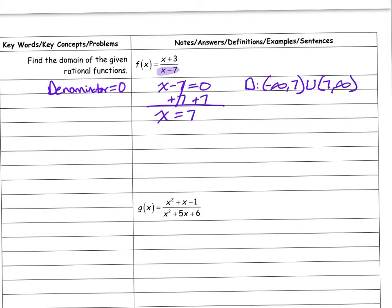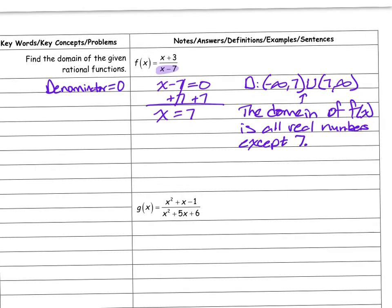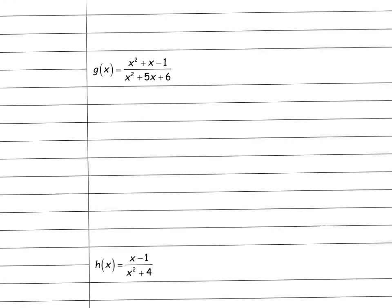Alternatively, I can write it out: the domain of f(x) is all real numbers except 7. Both forms say the same thing. Notice I didn't even look at the numerator — for domain, I'm only working with the denominator.